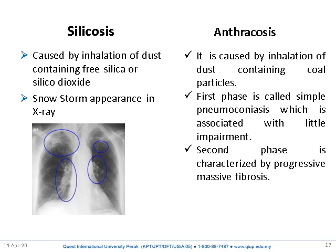Anthracosis is caused by inhalation of dust containing coal particles or carbon particles. The first phase is called simple pneumoconiosis, which is associated with little impairment. The second phase is characterized by progressive, massive fibrosis of the lungs due to prolonged exposure to coal or carbon particles.